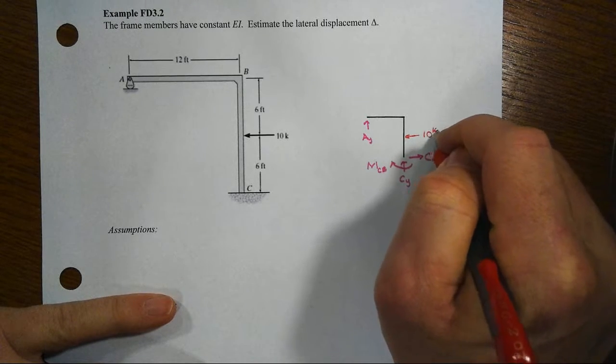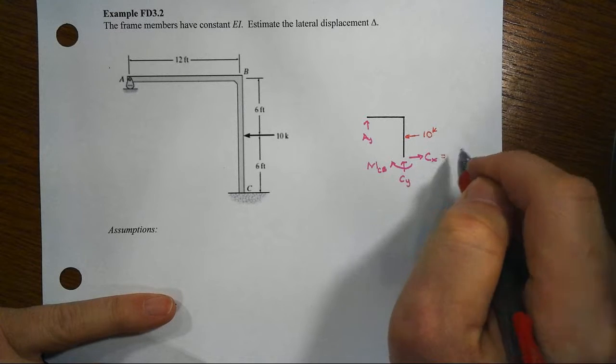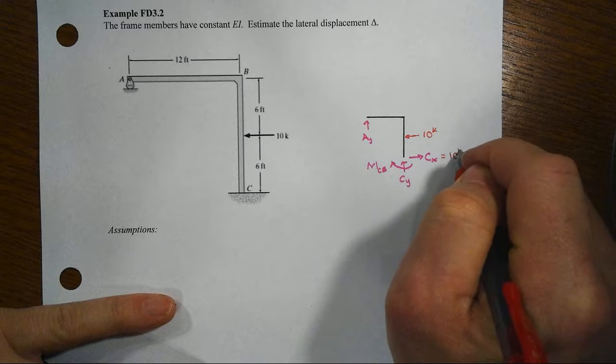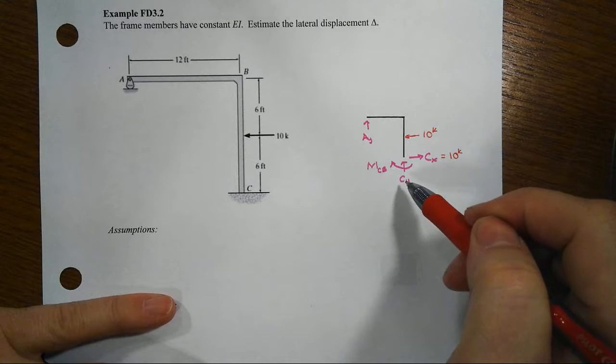For instance, with this applied load of 10 kips acting to the left and with no other reaction acting or possible in the horizontal direction, that means sum of forces in the X, that CX is also going to be equal to 10 kips.